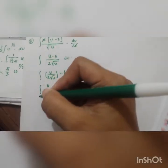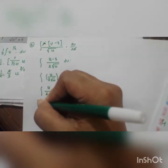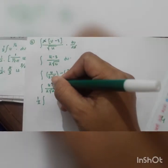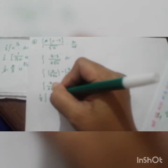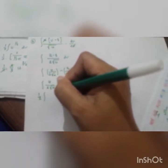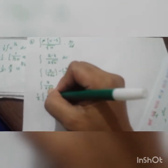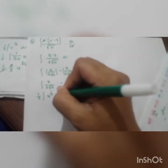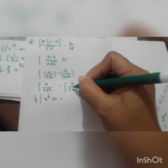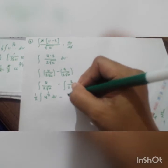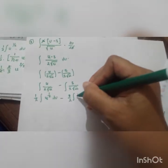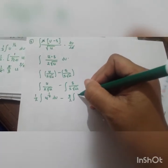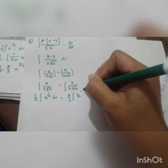Using the subtraction rule for integrals, for the first component the constant one-half goes outside the integral, and u divided by √u simplifies to u to the power of one-half, giving one-half times the integral of u^(1/2) du. For the second component, the constant 3/2 goes outside, and 1/√u is u to the power of negative one-half, giving 3/2 times the integral of u^(−1/2) du.